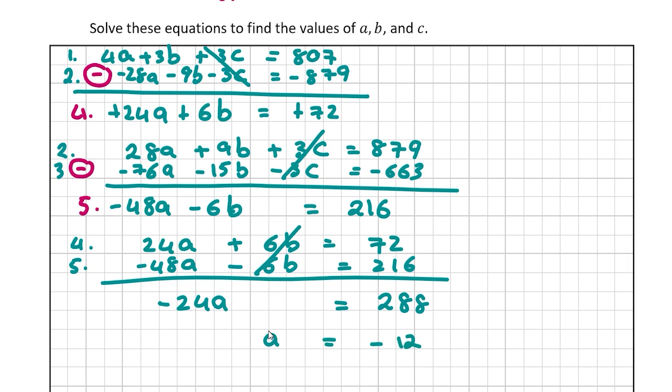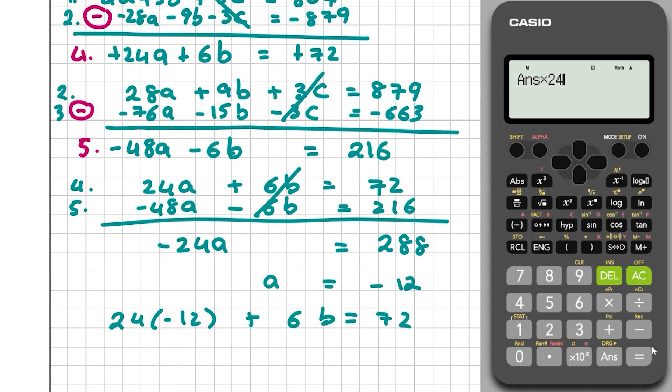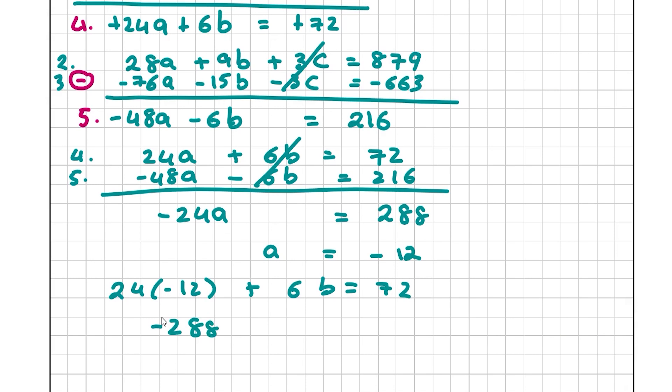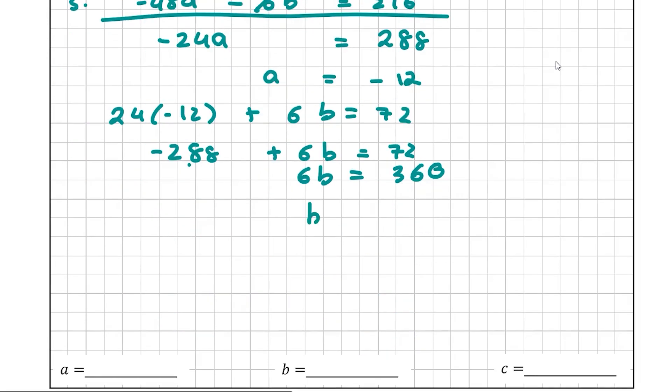So now let's fill this in to find a value for B. I'm going to take equation 4. So I'm going to go 24 × -12 + 6B = 72. 24 × -12 is -288 + 6B = 72. So 6B = 72 + 288 = 360. Divide that by 6 and you get 60. So B = 60.